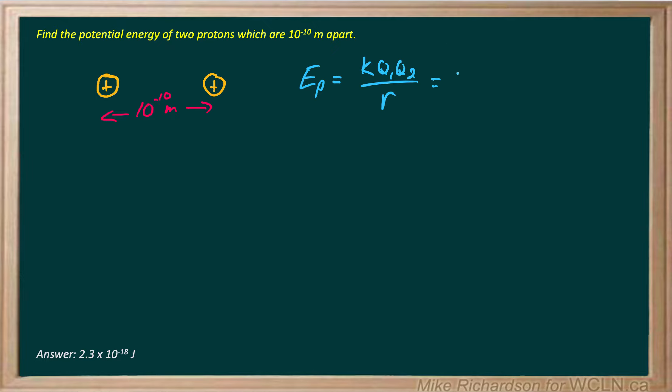So let's put in our values exactly the way we see them. So 9 times 10 to the 9, our usual Coulomb's constant. Charge 1 is the charge of a proton, which is the same as the charge of an electron, only positive. 1.6 times 10 to the negative 19. Same with charge 2. 1.6, 10 to the negative 19 Coulombs.